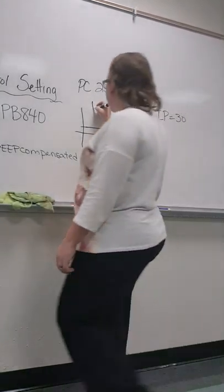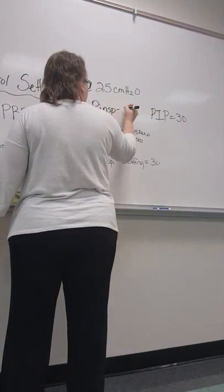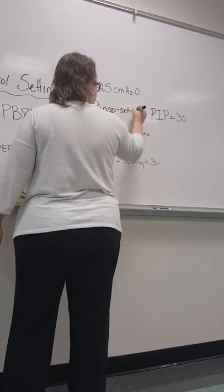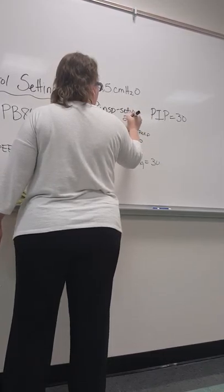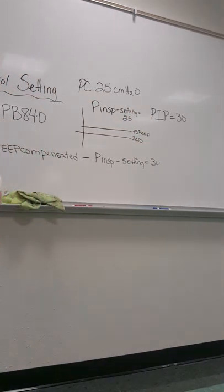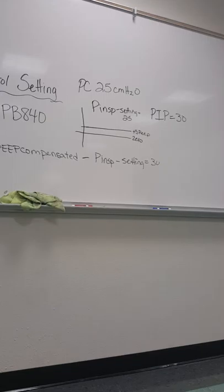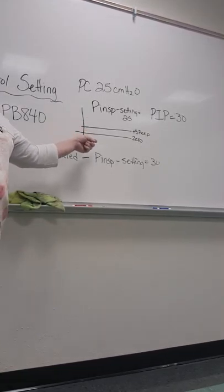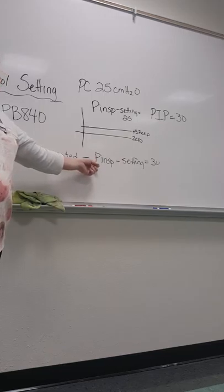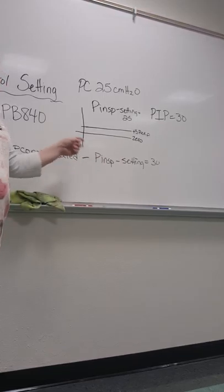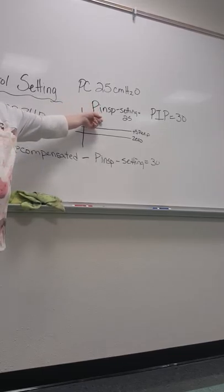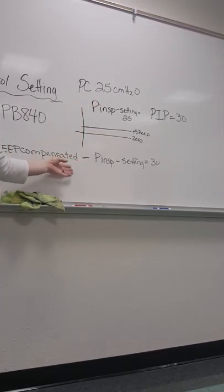Where on these, the P-inspiratory setting is going to equal 25. So when you're on the Dräger, whatever PEEP is ordered, you add it to the pressure control that was ordered by the doctor, and that's what you set your inspiratory setting at, your P-inspiratory. All three of the other vents, you set it at what the doctor ordered. So the only one that's going to be different is this one.